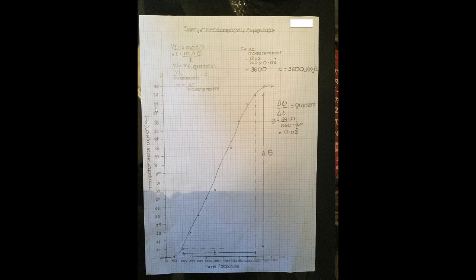You can see temperatures being plotted on the y-axis here, time on the x-axis, and here is the calculation for the gradient. So it's a change in temperature, 39 take away 21, divided by the change in time, 660 take away 120.